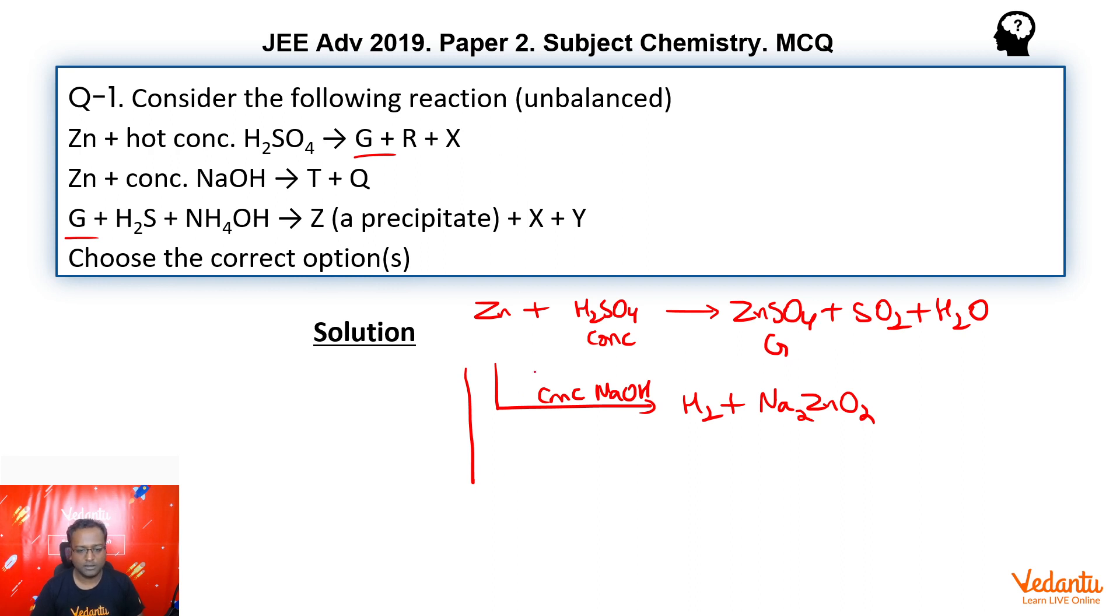Then for the third case, we have G, that is ZnSO4 reacting with H2S in basic medium. Now we know that Zn2+ gives sulfide precipitation in basic medium. So yes, the precipitate that they are talking about, ZnS, is this precipitate.